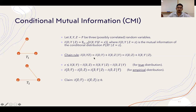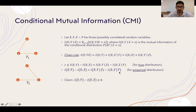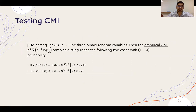For the true distribution, we have assumed the difference of mutual information is at least epsilon, because if it is at most epsilon there is nothing to prove. We can do a similar transformation from mutual information to conditional mutual information for the empirical distribution using the same chain rule. So whenever the true difference is at least epsilon, the empirical difference will also be at least some positive quantity. This essentially reduces to a problem of testing conditional mutual informations.